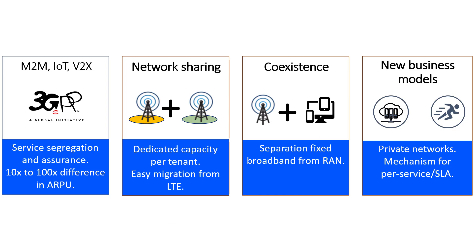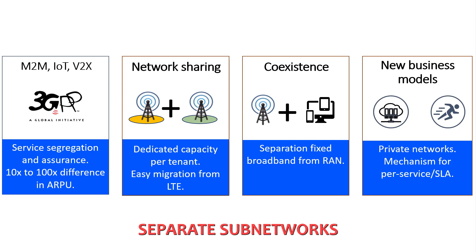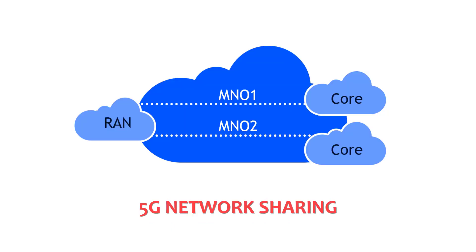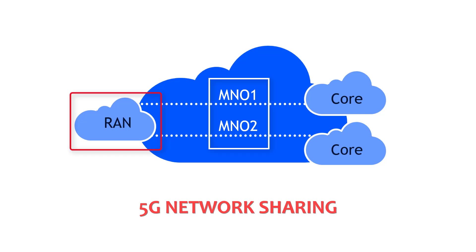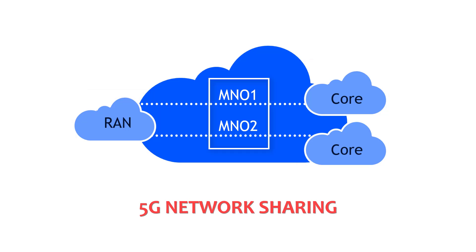Our solution enables physical segregation of the network, allowing tenant isolation by creating physical sub-networks. One essential need for 5G is network sharing, whereby two operators sharing the same RAN and transport infrastructure are physically segregated into two sub-networks.